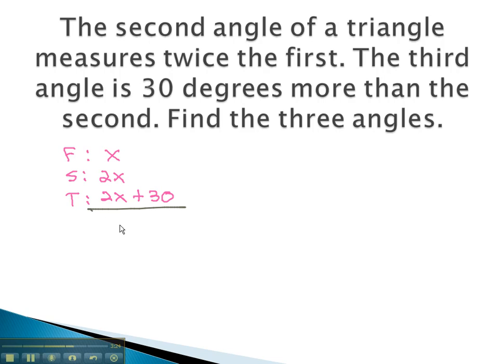We know that we can add these together, and they should equal 180 degrees. Combining like terms, we end up with 5x plus 30 equals 180.